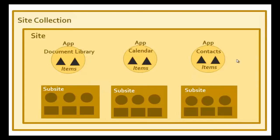What I want to cover in this video is a basic outline of the structure of a SharePoint arrangement. What we've got here is a diagrammatic view of what SharePoint structure is all about. At the very top level we have something called a site collection. The site collection encompasses as many sites as possible, and inside the site you would have applications.